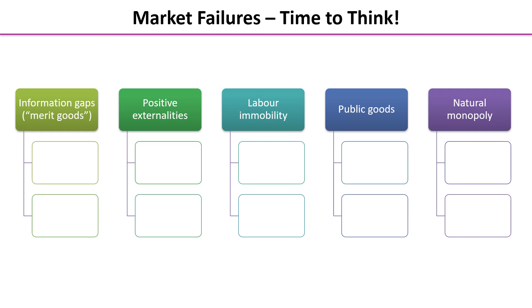So first of all, time to think. I want you to write down for each of the following causes of market failure two things you know about each of those market failures. It could be that it causes under-consumption, over-consumption, or maybe something about a market where we typically see these types of market failures. Pause the video and then replay when you're ready, and we can compare answers.